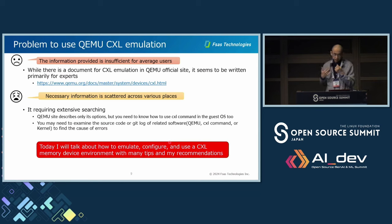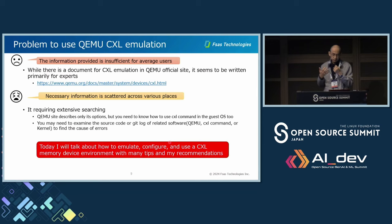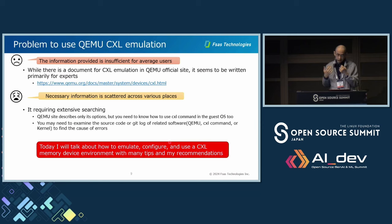The problem with using QEMU CXL emulation is that the information provided is insufficient for average users. While there is a document for CXL emulation on the QEMU official site, it seems to be written primarily for experts. Necessary information is scattered across various places and requires extensive searching. QEMU's site describes only its options, but you also need to know how to use CXL commands in the guest OS. You may need to examine the source code or Git log of related software — QEMU, CXL command, or kernel — to find the cause of errors. Today, I'll talk about how to emulate, configure, and use a CXL memory device environment with many tips and my recommendations.